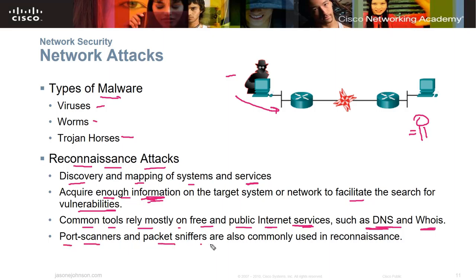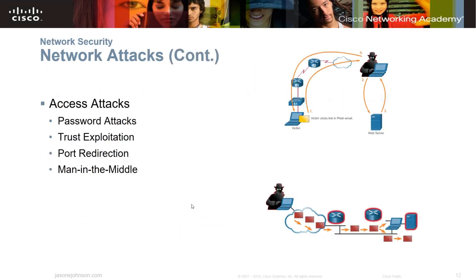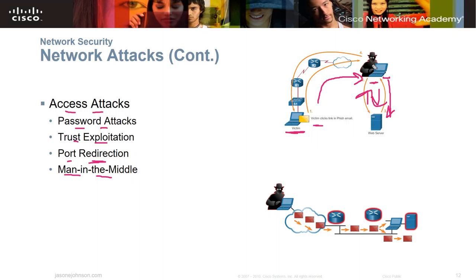Port scanners and packet sniffers are commonly used in reconnaissance — attackers may sniff public Wi-Fi or find a physical network jack in a building and plug in to start wire sniffing. That's why physical security is so important. Access attacks include password attacks, trust exploitation, port redirection, and man-in-the-middle attacks where a victim thinks they're communicating with a website directly, but traffic is being routed through an attacker's server that unencrypts, reads, then forwards the data.